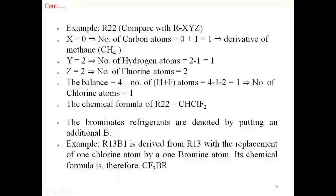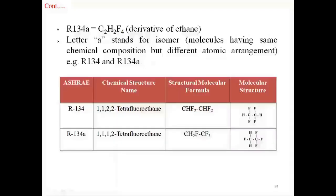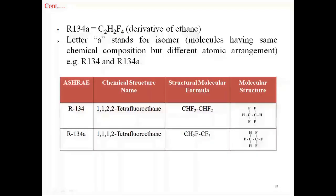Brominated refrigerants are denoted by adding the letter B. For example, R13B1 is derived from R13 with the replacement of one chlorine atom by one bromine atom; its chemical formula is CF₃Br. R134A: the alphabet A is lowercase. The chemical formula is C₂H₂F₄, a derivative of ethane. The letter A stands for isomer — molecules having the same chemical composition but different atomic arrangement. For example, R134 has the chemical structure name 1,1,2,2-tetrafluoroethane, whereas R134A has the structure name 1,1,1,2-tetrafluoroethane.